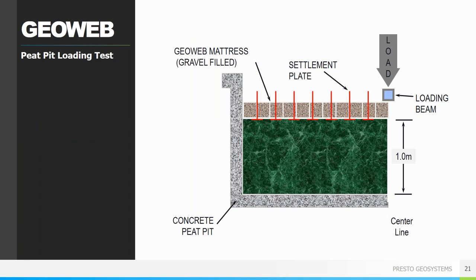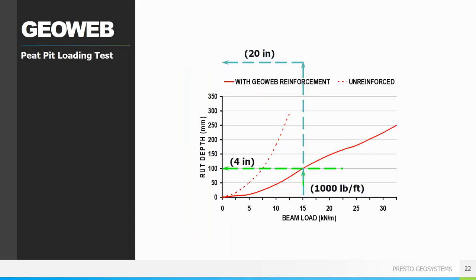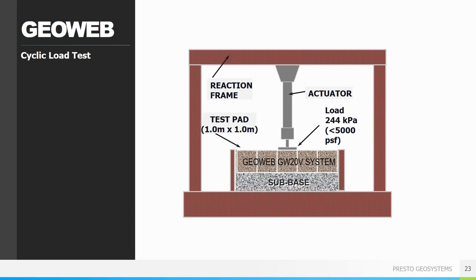Now we'll take a look at a couple of lab tests to show how GeoWeb can benefit your load support application. We started with one meter of supersaturated peat. Over the peat, a GeoWeb section was placed and infilled with gravel. Settlement plates were placed throughout the GeoWeb section prior to placement, and a load beam was placed over the section and loaded to failure. This was compared to an unreinforced aggregate section. The test showed that bases reinforced with GeoWeb provide a significant improvement — for a loading of 1,000 pounds per foot, a 4-inch rut depth occurred in the GeoWeb section, whereas the unreinforced soil had about a 20-inch rut depth.